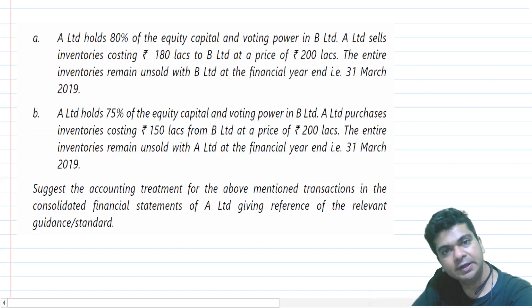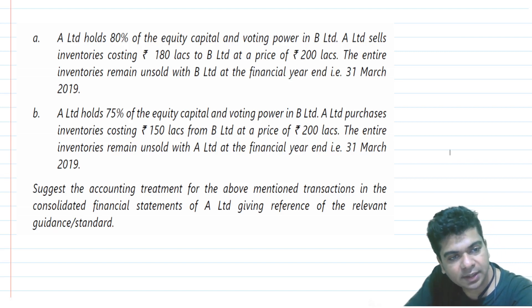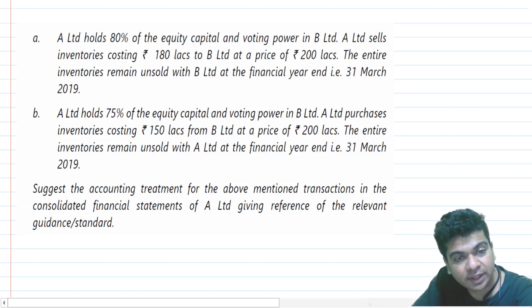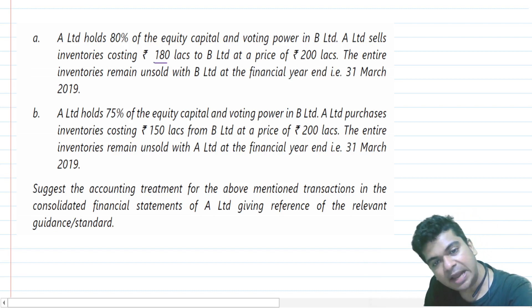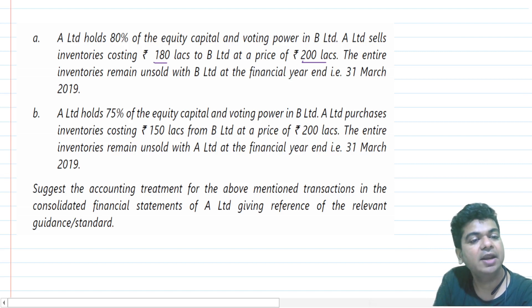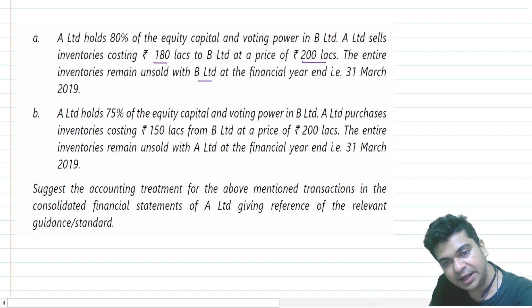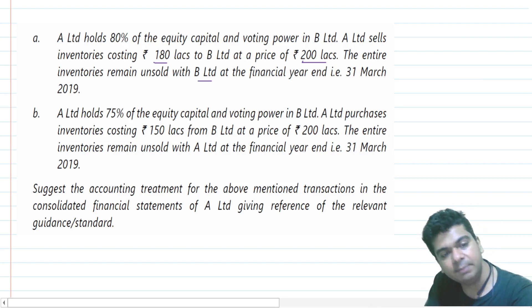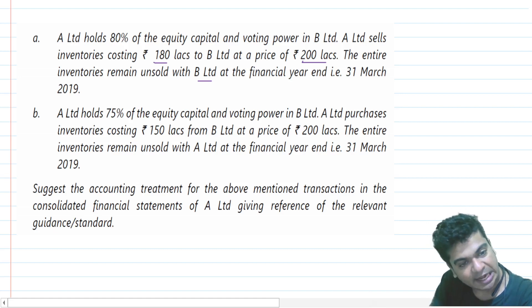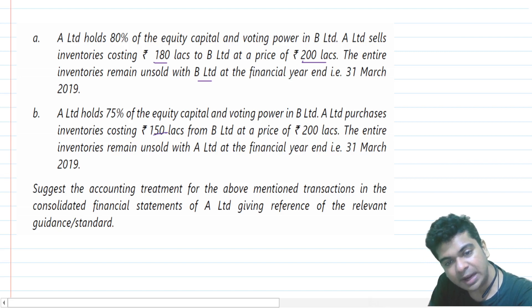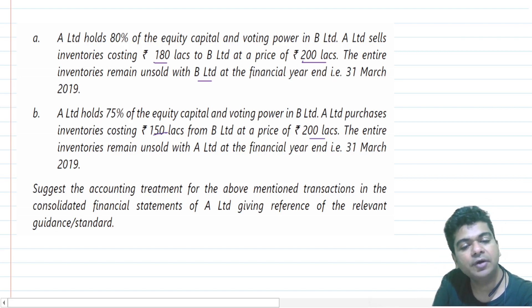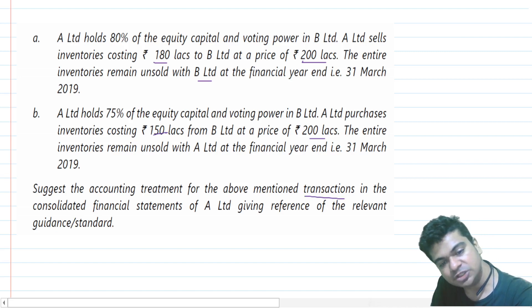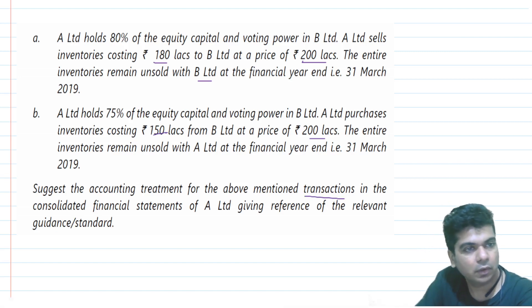There are two parts to this question, dealing with the treatment of transactions between parent and subsidiary. In Part A, A Limited holds 80% of the equity capital and voting power in B Limited. A Limited sells inventories costing rupees 180 lakhs at a price of rupees 200 lakhs. The entire inventory remains unsold with B Limited at the financial year ending 31st March 2019. In Part B, A Limited holds 75% and purchases inventories of 150 lakhs from B at a price of rupees 200 lakhs, with the entire inventory again remaining unsold. We need to suggest the accounting treatment in the consolidated financial statements of A Limited.